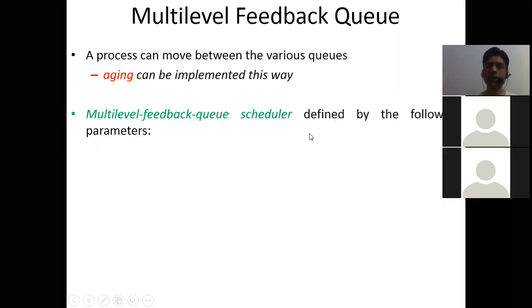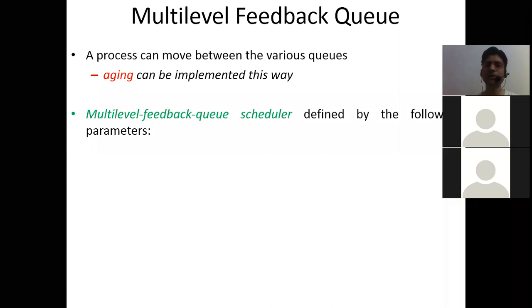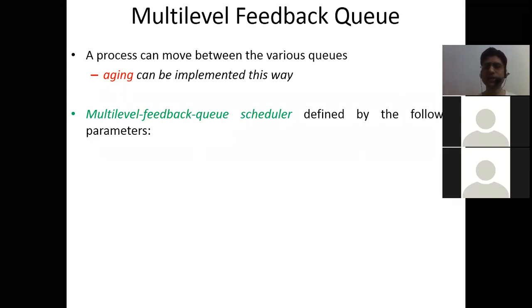Now, for multi-level feedback queue, there is always a scheduler which schedules all those processes. For multi-level feedback queue, we also need a separate scheduler which can schedule between these multiple queues of the ready queue. What are the essential parameters that a multi-level feedback queue scheduler requires? Firstly, we have to understand how many number of queues are there, and which type of algorithm we are going to implement in each queue.